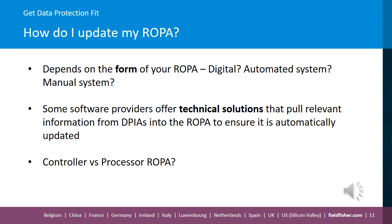For some, the ROPA will be maintained in a privacy tech tool such as OneTrust, which gets updated in an automated or semi-automated way. For others, it will be in the format of a spreadsheet or even a table within a Word document. Our message is that consistency is key and the format is largely a moot point, as long as the record is accurate and kept up to date. A number of European data protection authorities, for example the CNIL in France or the ICO in the UK, have published ROPA templates on their websites in Excel, and these can be easily downloaded and used by your organisation.